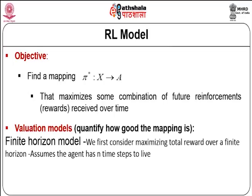There are two types of valuation models. One is the finite horizon model, where we consider maximizing the total reward over a finite horizon. This assumes the agent can take only n time steps — a limit is placed on time. The expected value is the summation from t=0 to T, where T is the total horizon and R_t is the reward at each time point t. This is the finite horizon model.